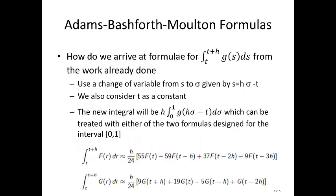So, how do we arrive at the formula for the integral from t to t plus h, g of s, ds from the work already done? Well, basically what we do is we use a change of variable from s to small sigma given by s equals h times small sigma minus t. We also consider t as a constant. The new integral will be h times the integral from 0 to 1, g of h sigma plus t d sigma, which can be treated with either of the two formulas designed for the interval 0 to 1. And those are given below.